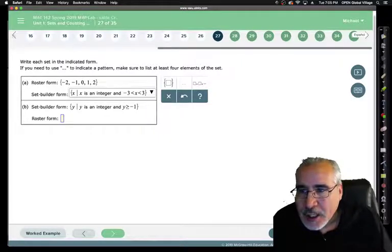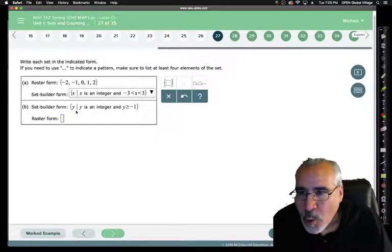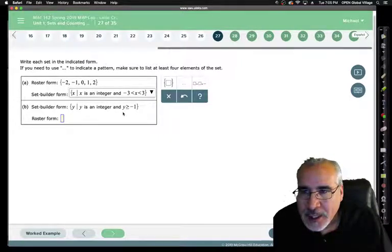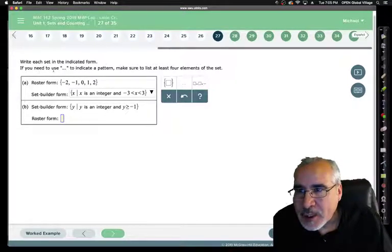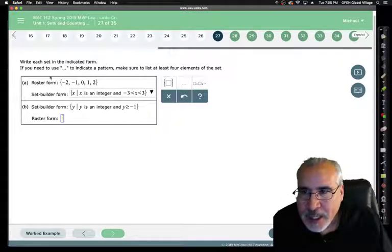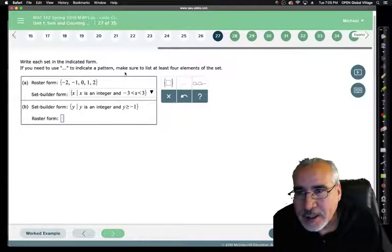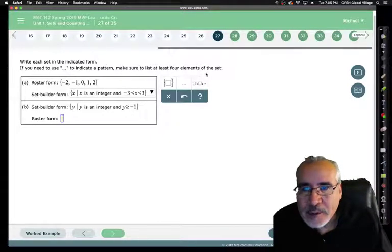Now we're given the set builder form: Y such that Y is an integer and Y is greater than or equal to negative 1. Okay, so how are we going to do this? We have to look up here. If you need to use dot dot dot to indicate a pattern, this means continue the pattern. Make sure you list at least 4 elements.